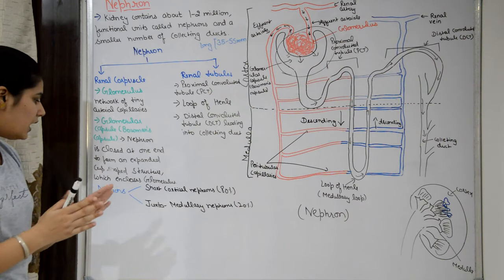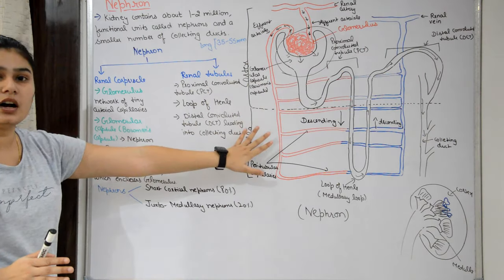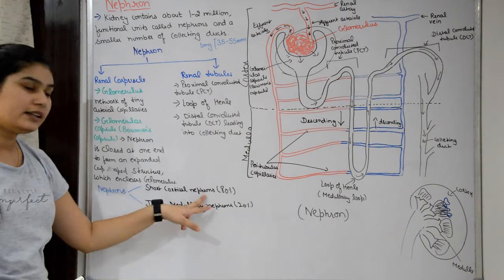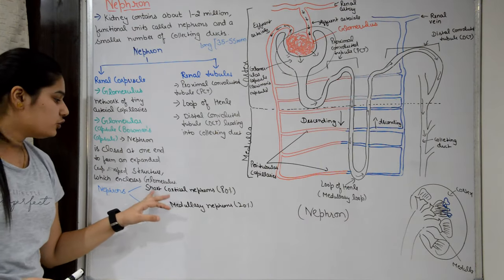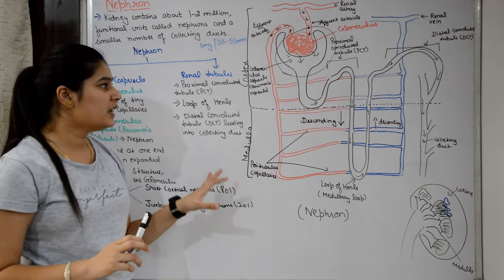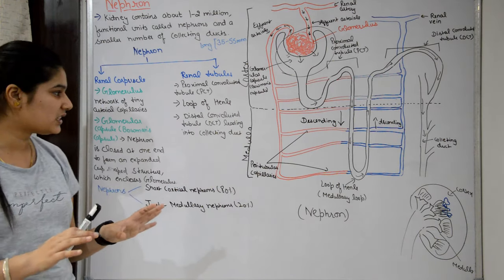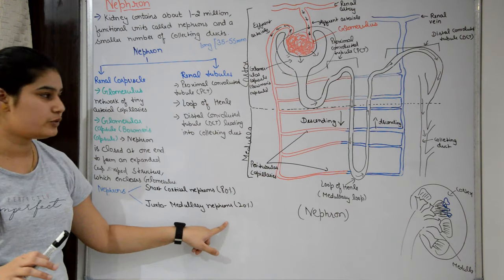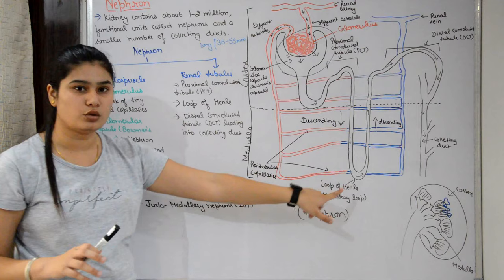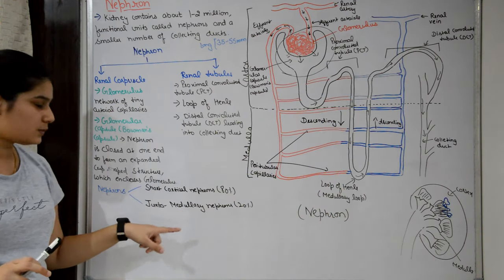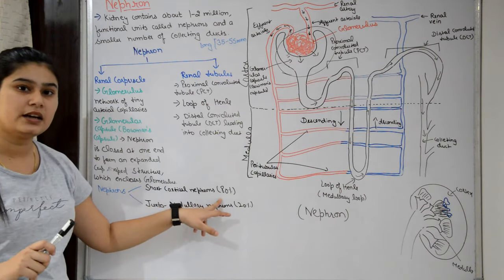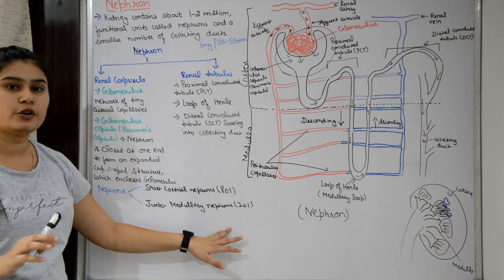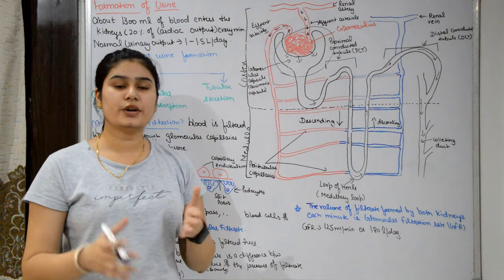There are two types of nephrons: short cortical nephrons, which make up about 80%, and juxtamedullary nephrons, which make up about 20%.